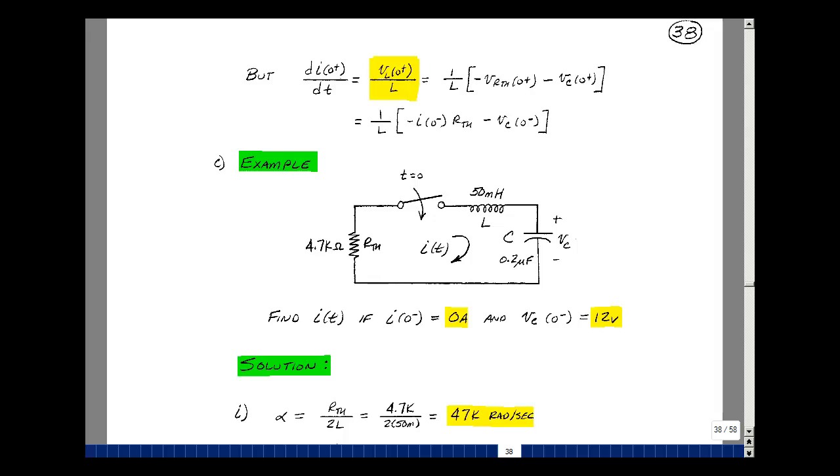Let's take a look at an example where I've got R Thevenin, L, and C, and a switch. The initial condition on this coil will be 0 amps. Suppose that we charge this capacitor up to 12 volts. Let the switch close at t equals 0, and then we've got our series RLC circuit. We can apply the equations we just developed.